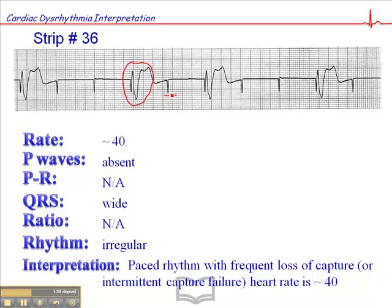Here we have loss of capture. If we don't see electrical capture, we're probably not going to feel mechanical capture, but we're going to check a pulse anyway. If you were to feel a pulse, it would probably be around 40. This is a serious problem — a pacemaker rhythm with loss of capture and bradycardia. It may be positional, so you may find that the patient has good capture when lying on one side and loss of capture on another. You might fiddle with that during transport. But this is a problem that can only be managed in hospital, where they may have to go in and make adjustments to the pacemaker.